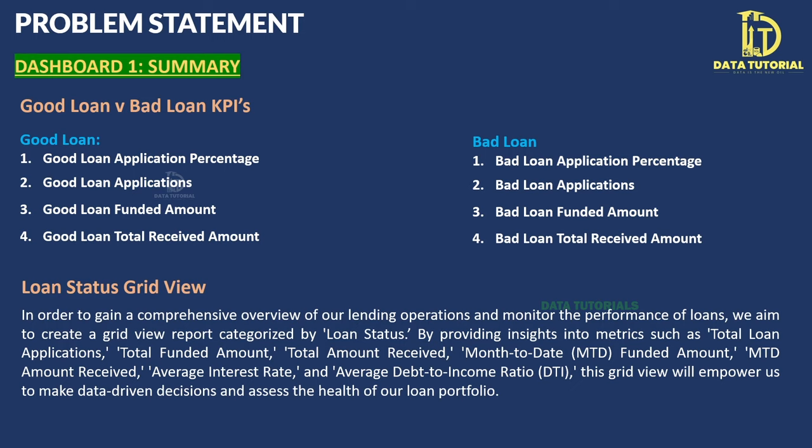The fifth chart is Loan Purpose analysis using bar charts — showing why borrowers took loans (e.g., car, debt consolidation, medical). The sixth is Home Ownership analysis — whether the borrower owns, rents, or is on mortgage. For all six charts, the three metrics shown are Total Loan Applications, Total Funded Amount, and Total Amount Received, controlled by a dynamic parameter.